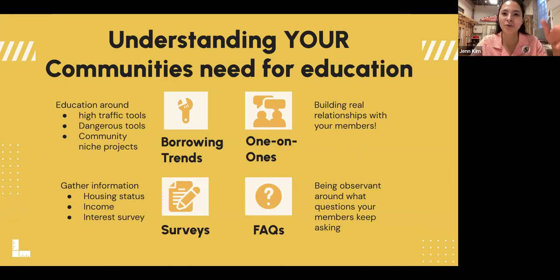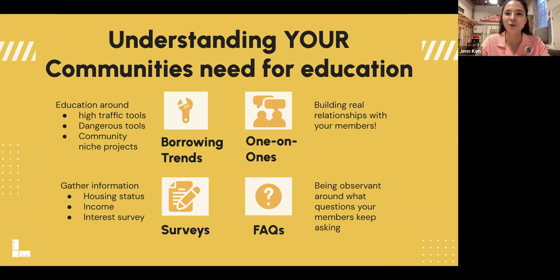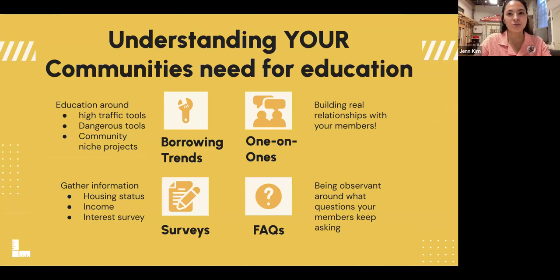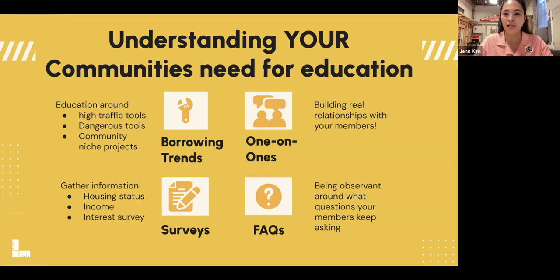A big component of determining whether you want to develop educational programming is understanding the need you might be filling — specifically understanding your community needs and how best to meet them. This happens through assessment. Some methods include assessment through borrowing trends: can you identify and provide education around tools your community already deems valuable? For example, does your lending library lend out a lot of gardening tools, renovation tools, or auto tools? If so, maybe you create education around those fields. You can also learn from whether tools are coming back in good working condition — if not, there may be a need for more education on how to use them properly.